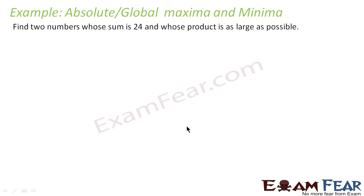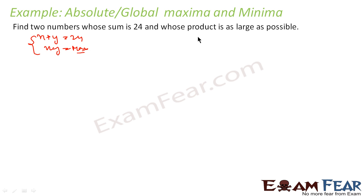We have to find two numbers whose sum is 24 and the product is as large as possible. Is it the absolute global maxima question? The question says x plus y are two numbers, the sum is 24 and x·y is some maximum number. But here if you see there is no domain, no interval — since the interval is not defined as an open interval question, it is not an absolute maxima question.